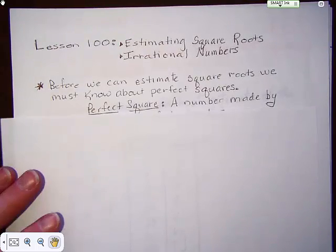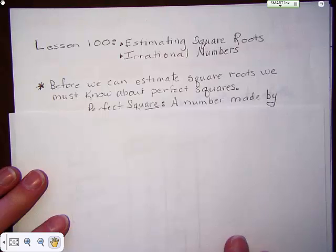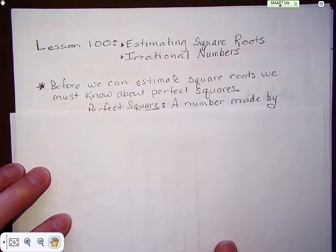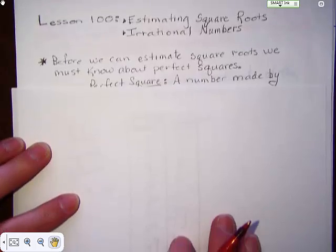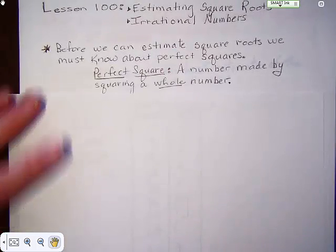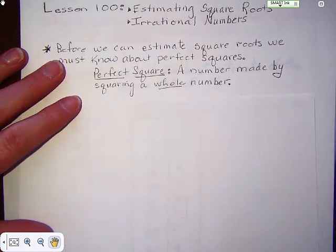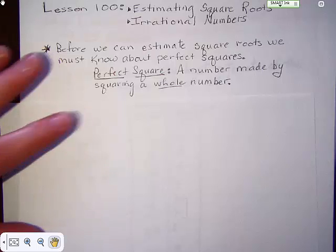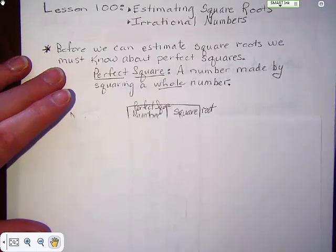Before we can start to talk about square roots, we need to know a little bit about perfect squares. A perfect square is a number that's made by squaring, or multiplying by itself, a whole number.